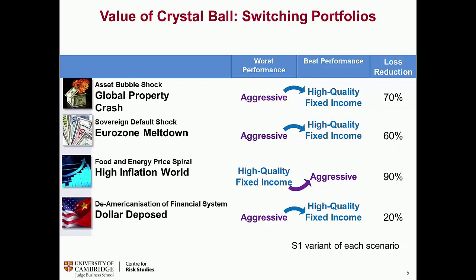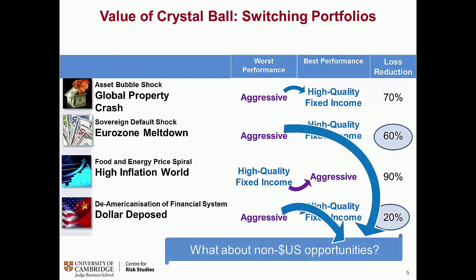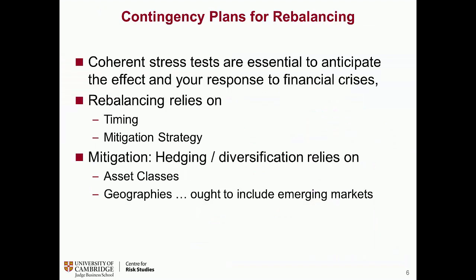We can repeat that message portfolio type by portfolio type, or go through it as a real-environment asset type by asset type. But if you had a crystal ball and knew which one of these was going to occur — which I don't — I would be thinking of moving away from aggressive portfolios to a high-quality fixed income portfolio in most of these cases, except in one. This is a rather narrow view of the world, and rebalancing has been mentioned.